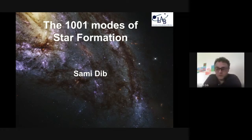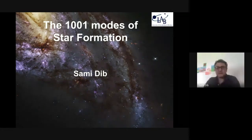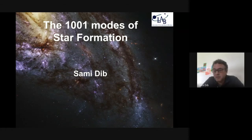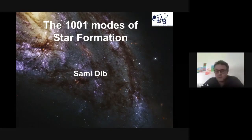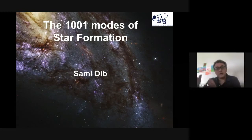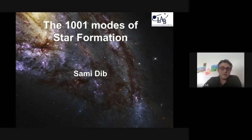The subject of this talk is about variations in the star formation process. Over the last few years there has been a paradigm shift toward understanding not so much how universal star formation is, but how much variation there is. These variations don't necessarily imply different physics operating from region to region or galaxy to galaxy, but depending on environmental conditions, a given process may dominate over others and produce scatter.